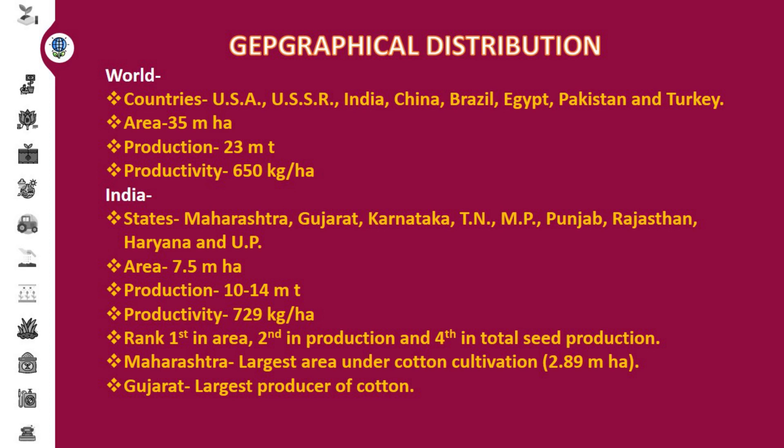In case of geographical distribution, United States of America, Union of Soviet Socialist Republic, India, China, Brazil, Egypt, Pakistan, and Turkey are the major countries of cotton cultivation. Around 35 million hectare area is under cultivation of cotton, producing 23 million tons of cotton, and productivity is 650 kg per hectare. In India, Maharashtra, Gujarat, Karnataka, Tamil Nadu, Madhya Pradesh, Punjab, Rajasthan, Haryana, and UP are the major states of cotton cultivation.